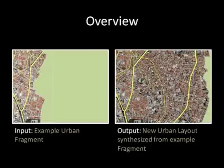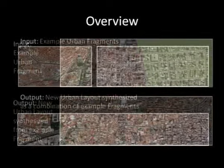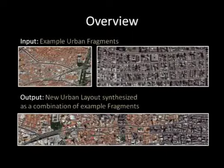In this work, we present an interactive system for synthesizing urban layouts by example. We provide a system that allows a user to load example fragments from real-world cities and, in a few minutes, generate a new urban layout containing streets, blocks, parcels, and aerial imagery of a style similar to that of the input fragments.